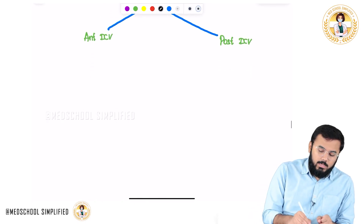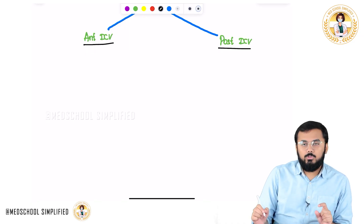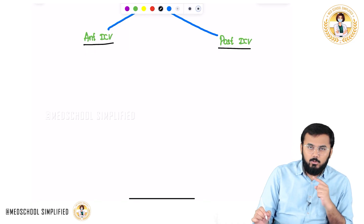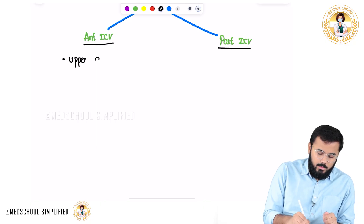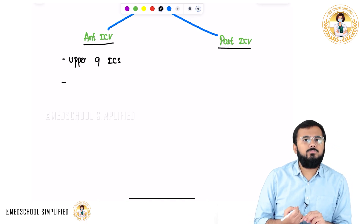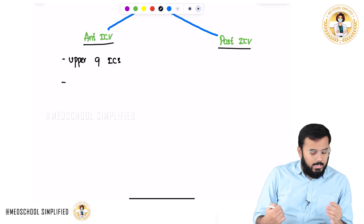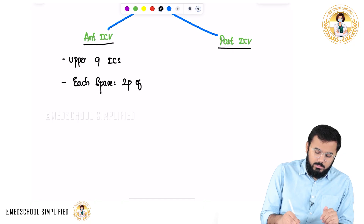In how many intercostal spaces are these veins located? The anterior intercostal vein is found in the upper nine intercostal spaces, same like arteries. And just as we had two pairs of anterior intercostal arteries in each space, each space also contains two pairs of anterior intercostal veins.